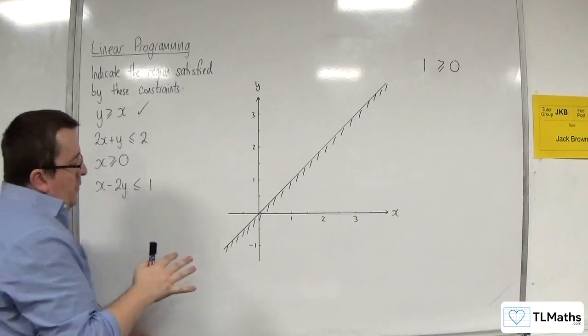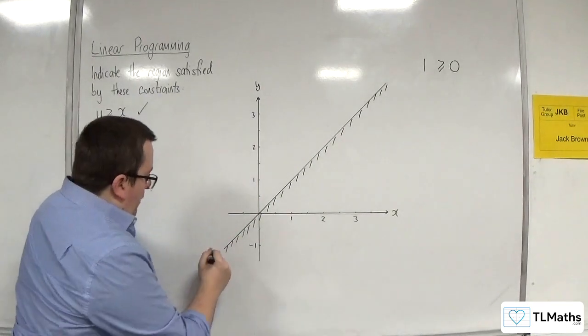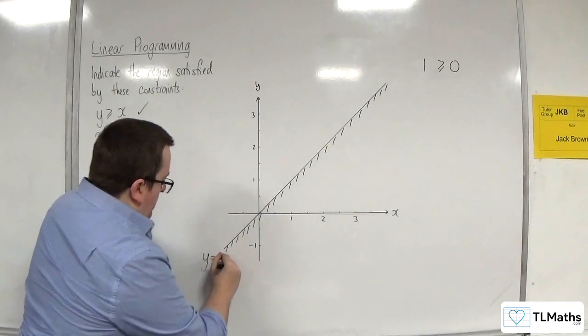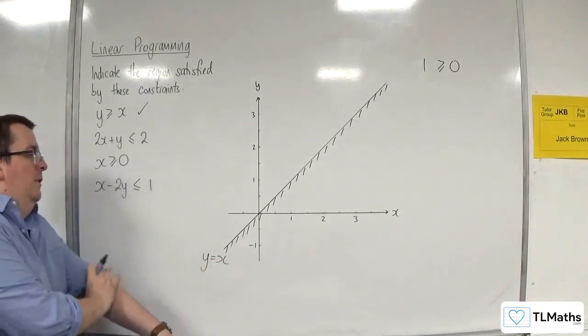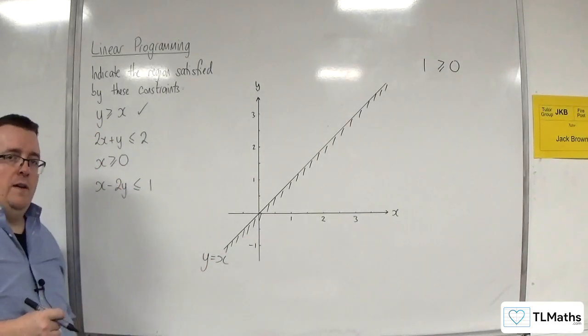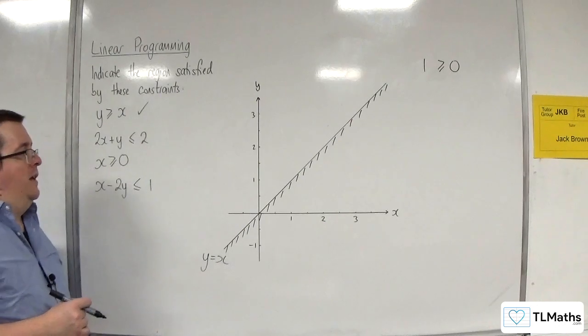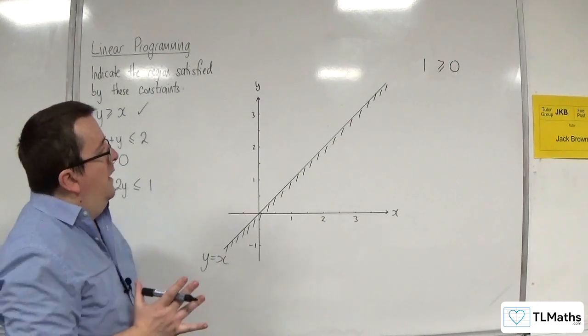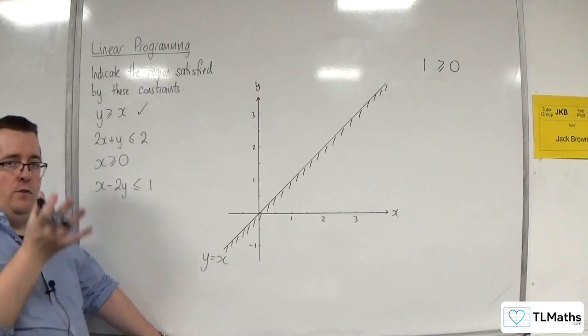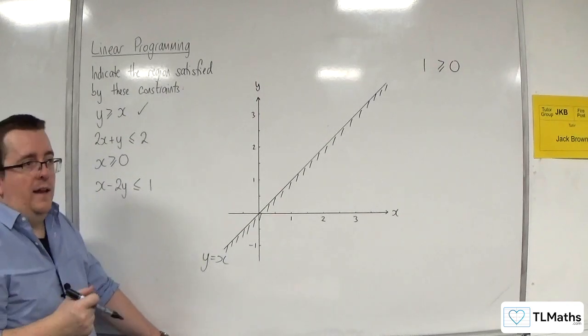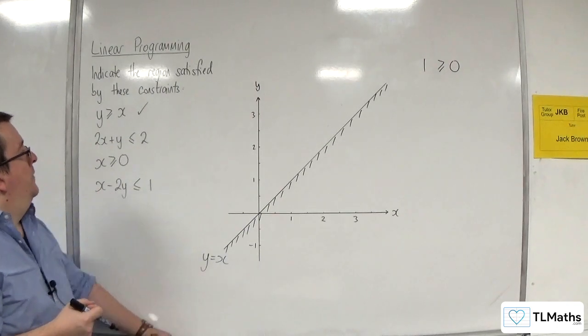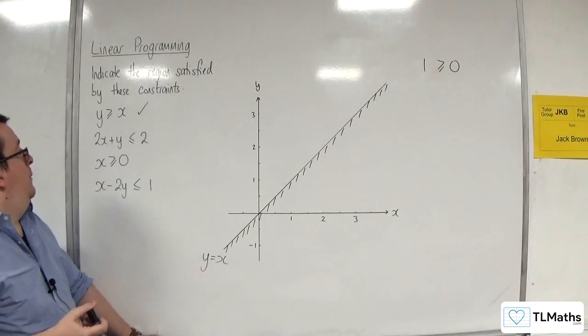Now, if you want to, as we go through, if you've got space, then it might be useful to just kind of identify those inequalities as we go, so that it's then easier to identify if we need to use them later to find the intersections. So y equals x is that one.